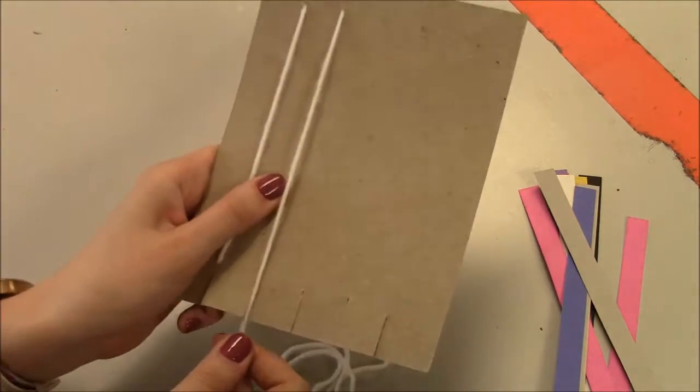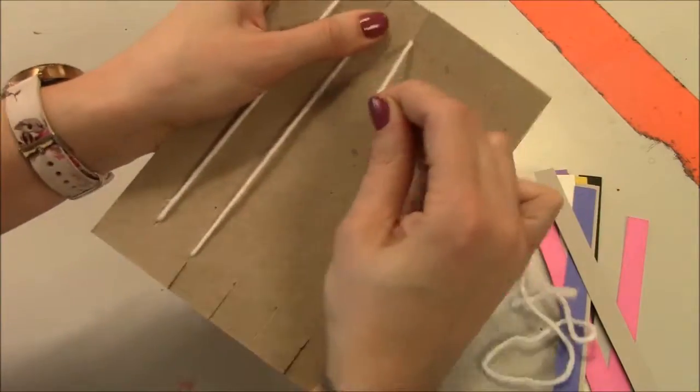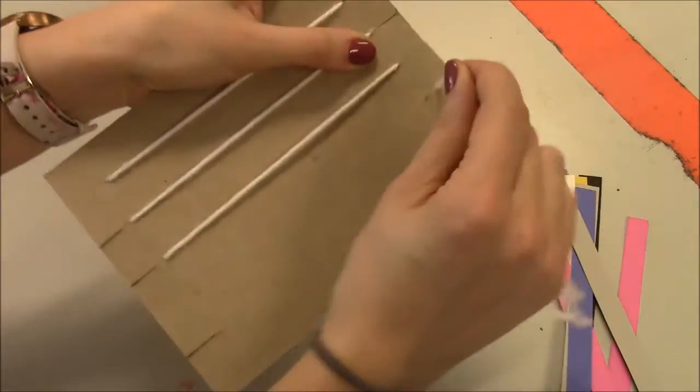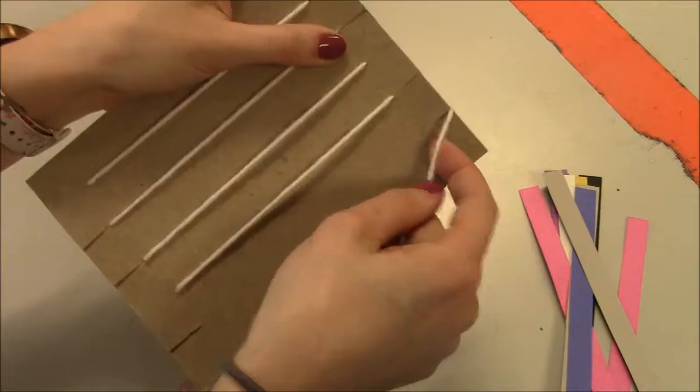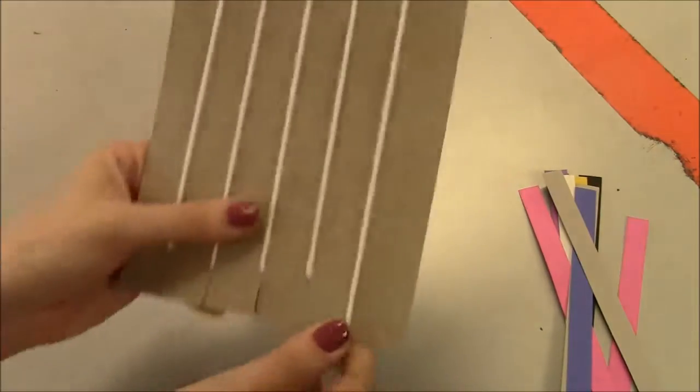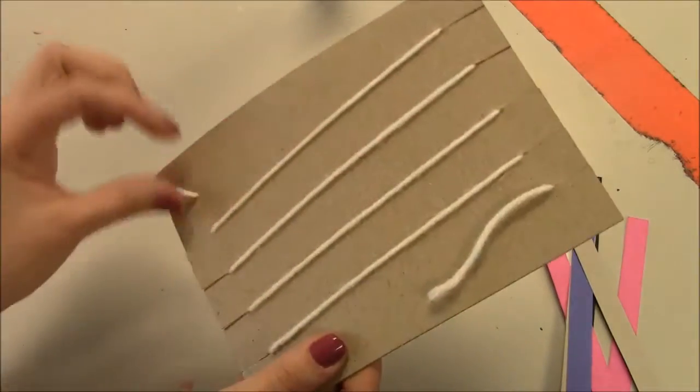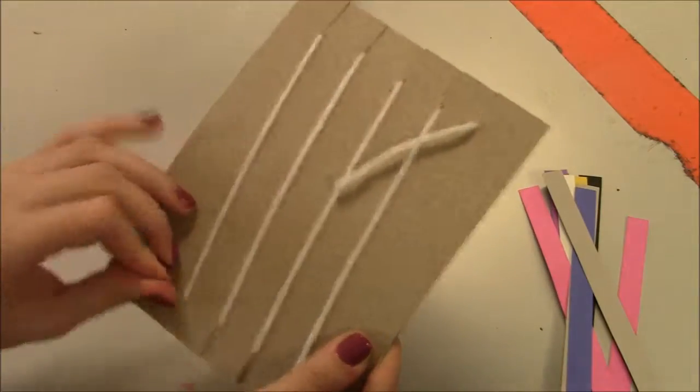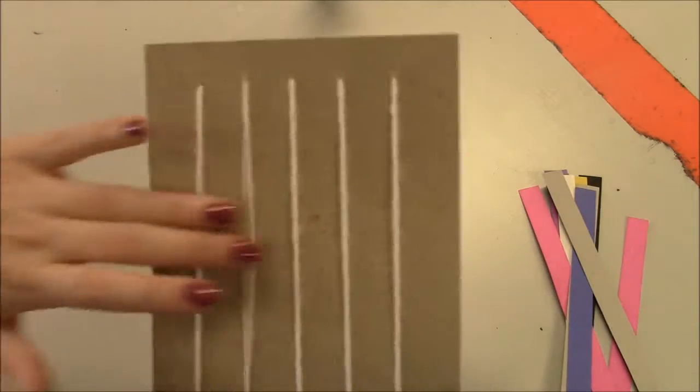They're not loose. I'm going to go down to my second slot, wrap it around, come up, go down, wrap it around, and you're going to wrap it around until you have five warp strings, kind of like a guitar. You want to have five warp strings and both tails should be on the back. So if you see this and it has the tails, you know that that's the back. We're going to flip it over. They're nice and tight.